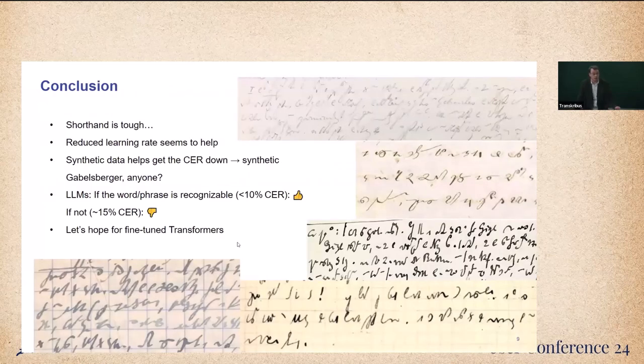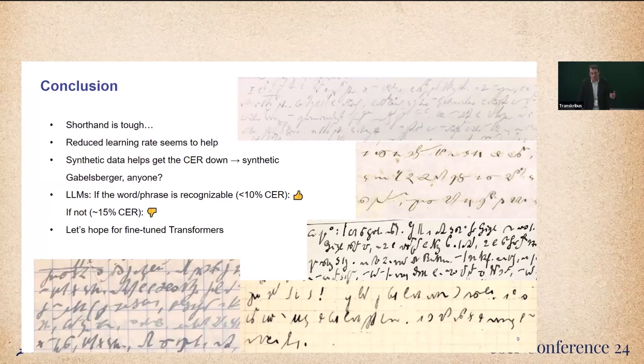So to conclude: shorthand is tough, but it works to some degree. Reducing the learning rate during training seemed to help. We do have synthetic data for Deutsche Einheitskurzschrift, but we don't for Gabelsberger. It would be good to add synthetic Gabelsberger training data for our training.